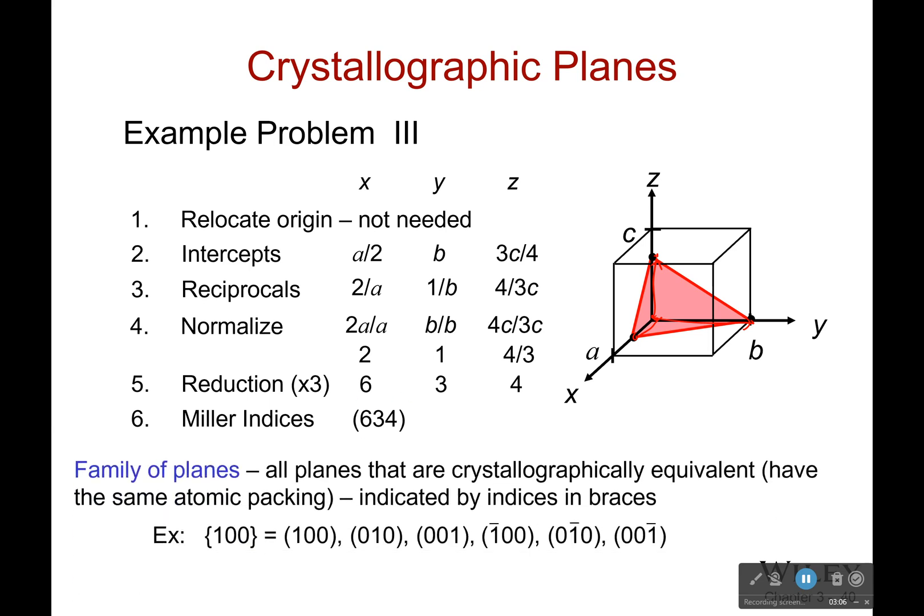And you also have things called a family of planes, which is very similar to our directions. It's just all the planes that are crystallographically equivalent, which means they have the same atomic packing. Do you remember from earlier when I was talking about how we had our face centered cubic cell and it's like five on the top and then it had four underneath that, we've got like right here, we can't really see them. And then we had some more underneath that. Okay.